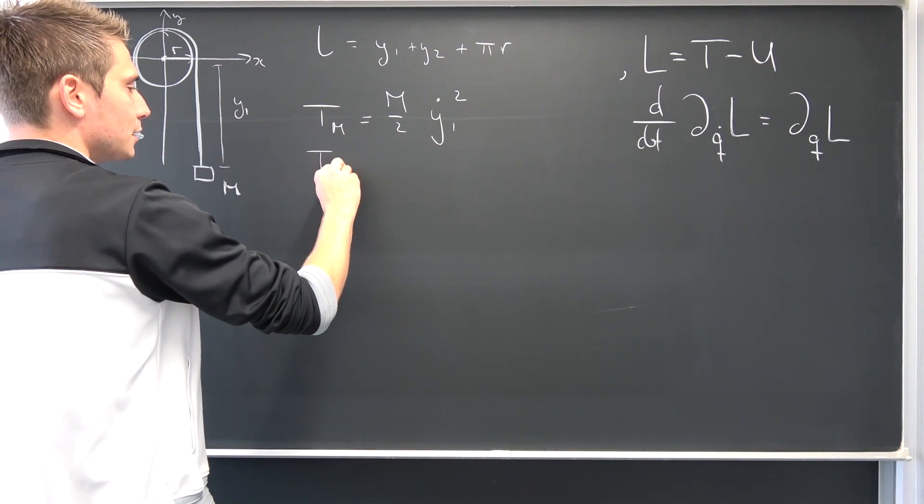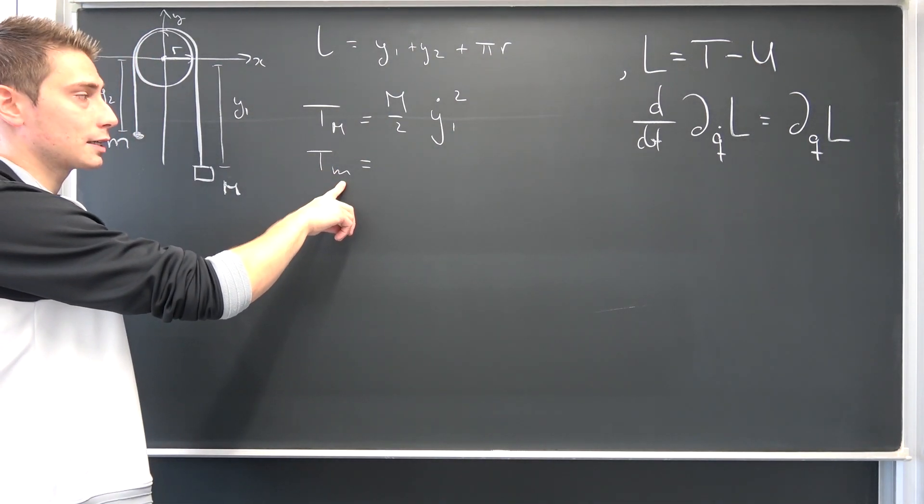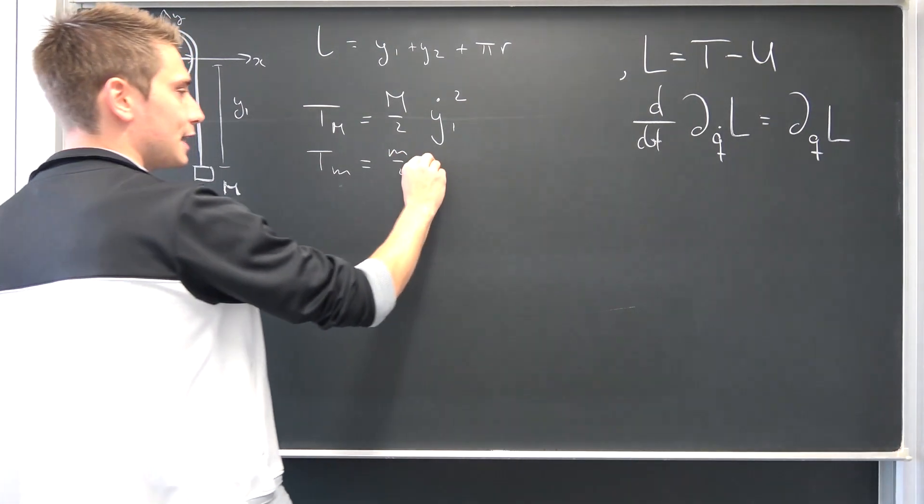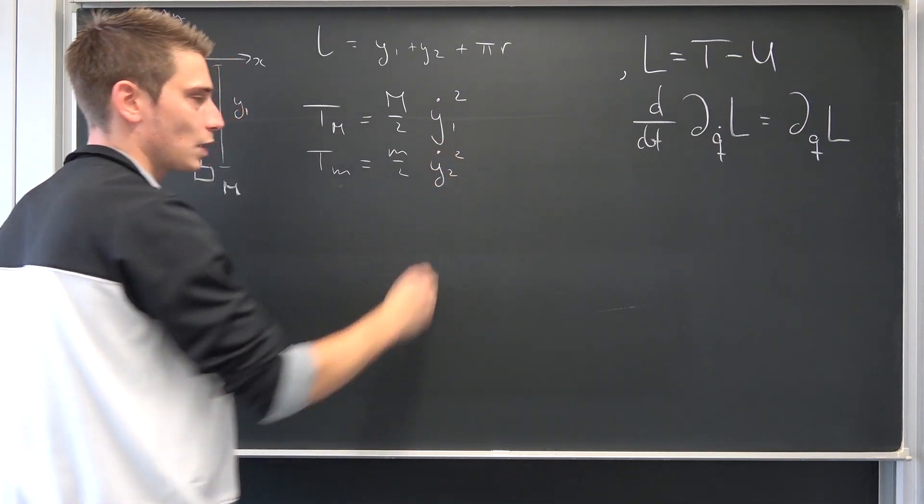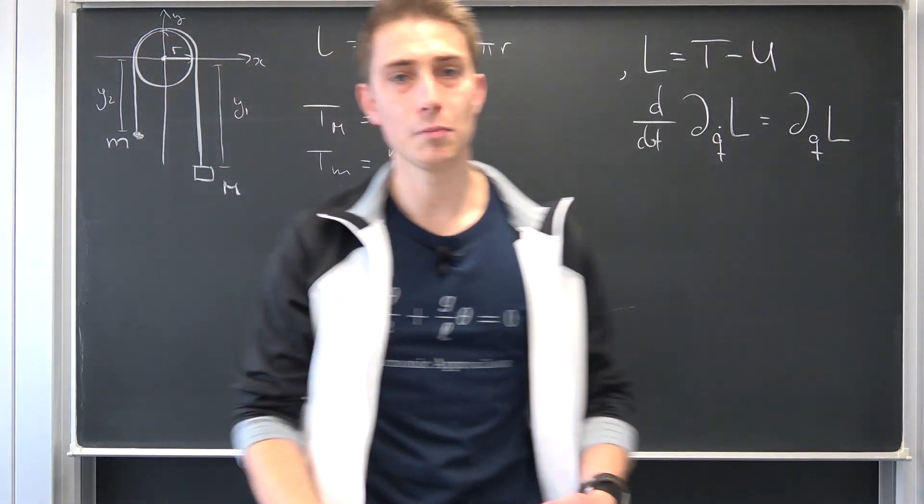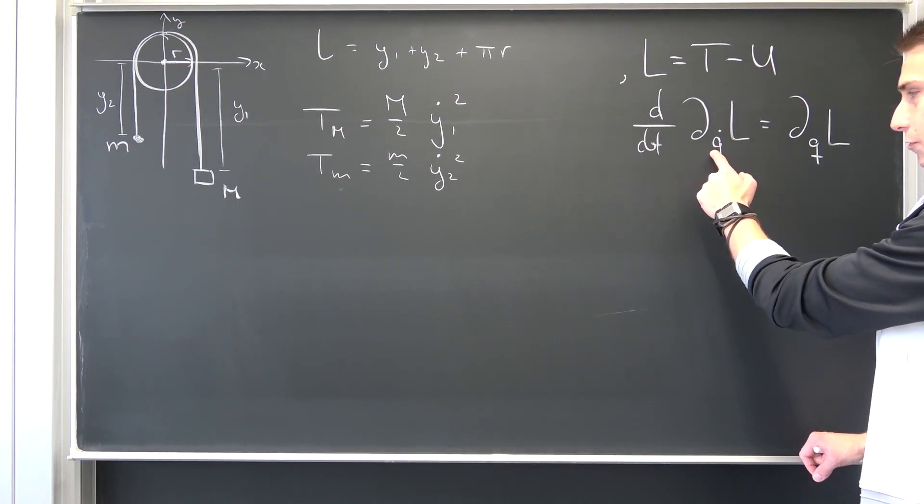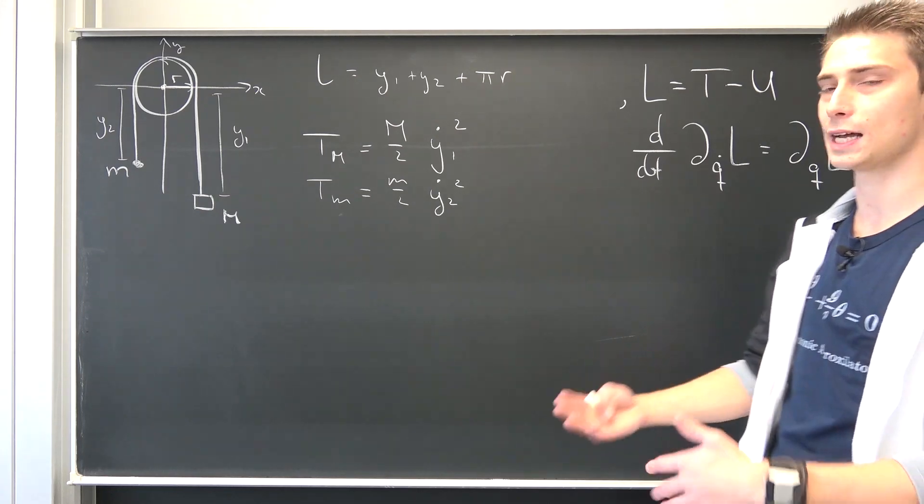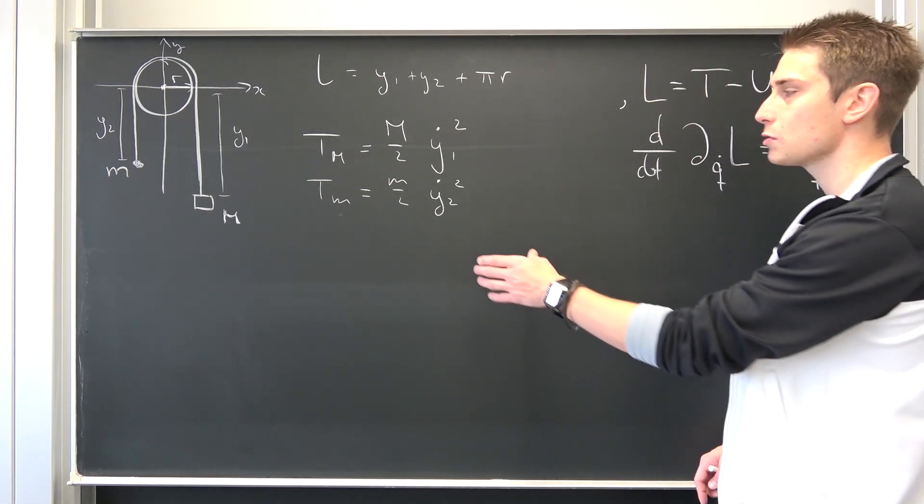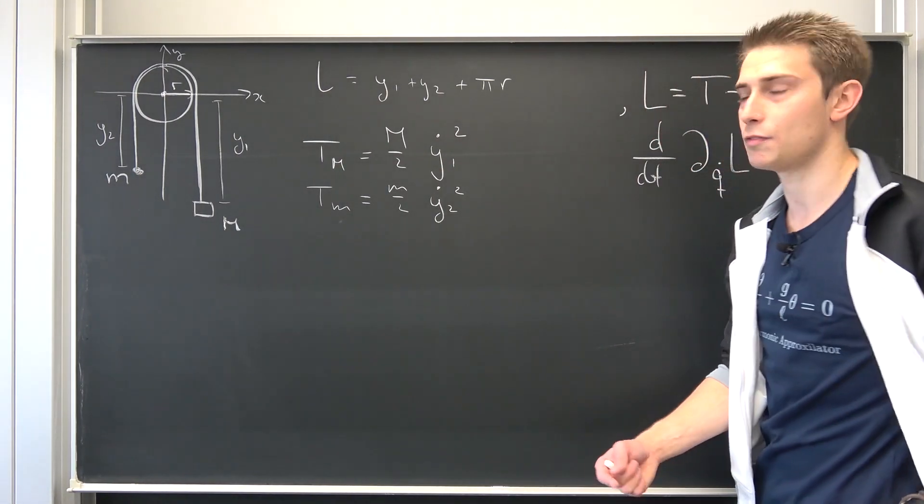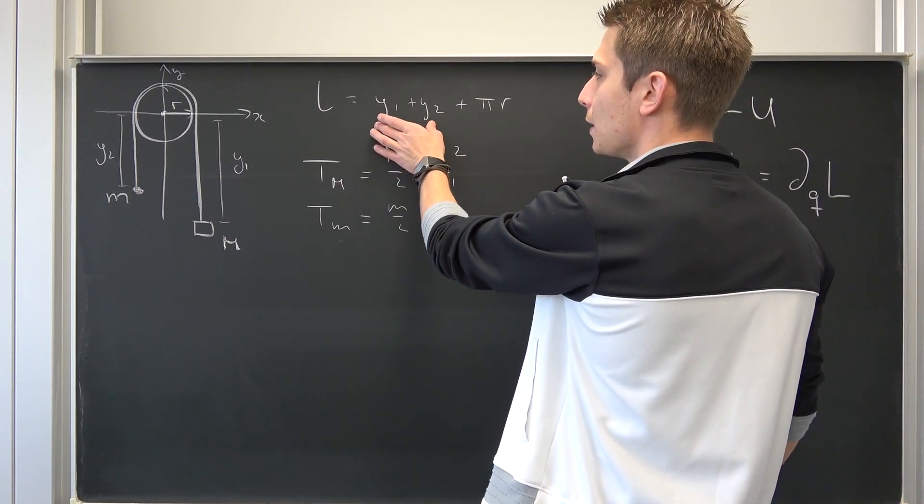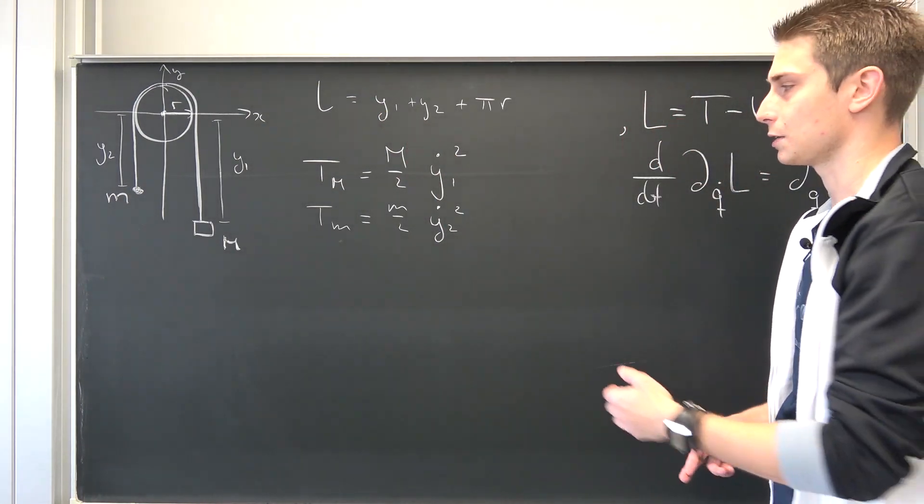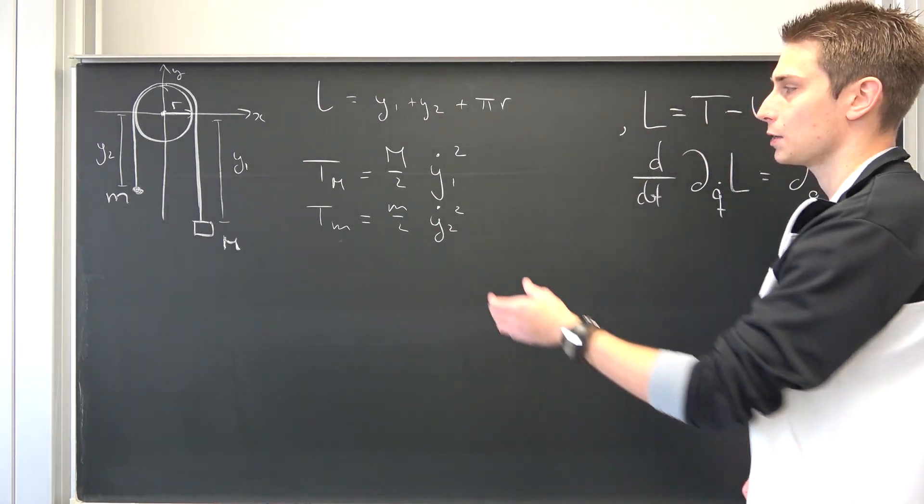Meaning our velocity of our big mass is actually nothing other than Y1 dot but squared. I hope you can see where this comes from. Also, we have the kinetic energy of our small mass. It's m over 2 times, by the same argumentation, Y2 dot squared. But having more than one variable is kind of messy because then you have more constraints, and this is nothing that you want. So you want to find a nice analytic solution in the end, and we would like to reduce this problem to simply one variable. And the cool thing is we actually have this connection between Y1 and Y2.